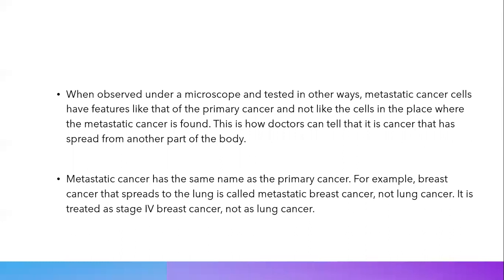This is how doctors can tell that it is cancer that has spread from another part of the body. Metastatic cancer has the same name as the primary cancer. For example, breast cancer that has spread to the lungs is called metastatic breast cancer, not lung cancer — it is treated as stage four breast cancer, not as lung cancer.